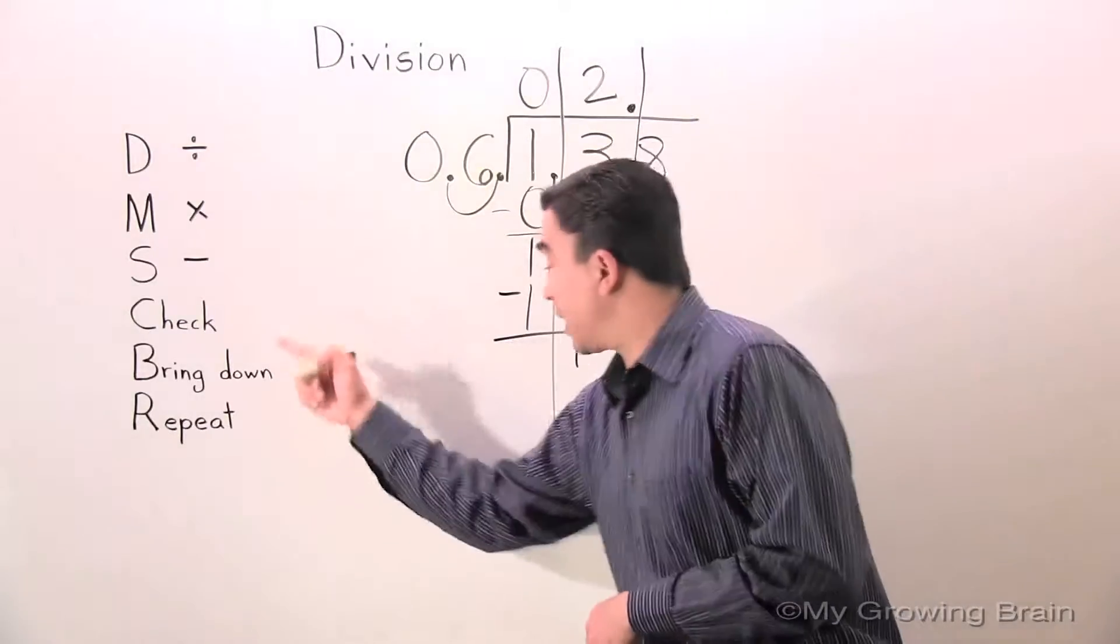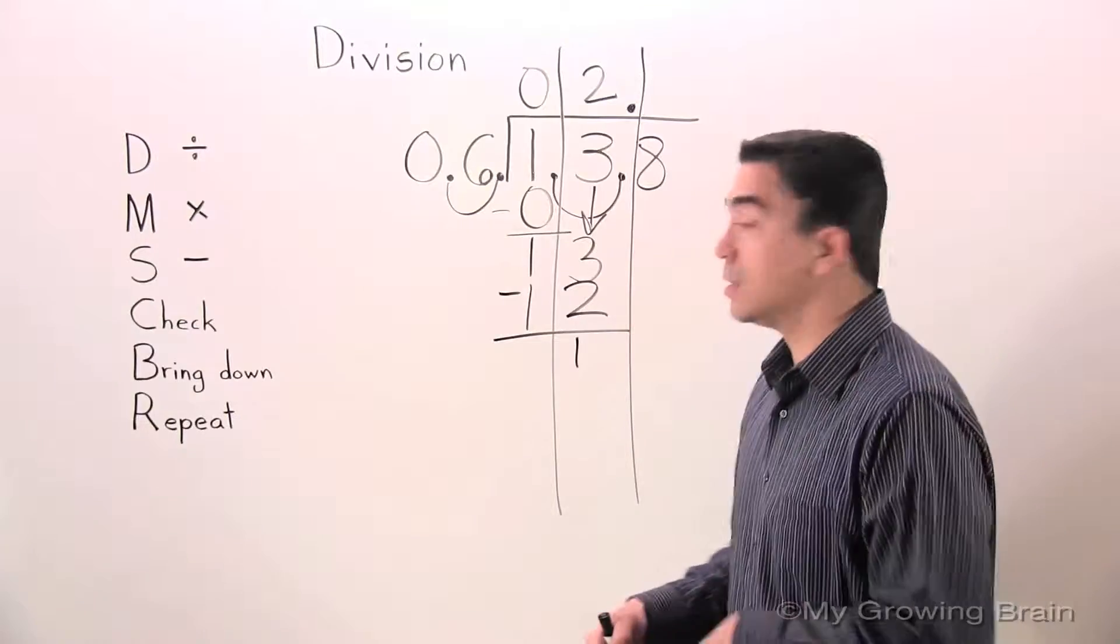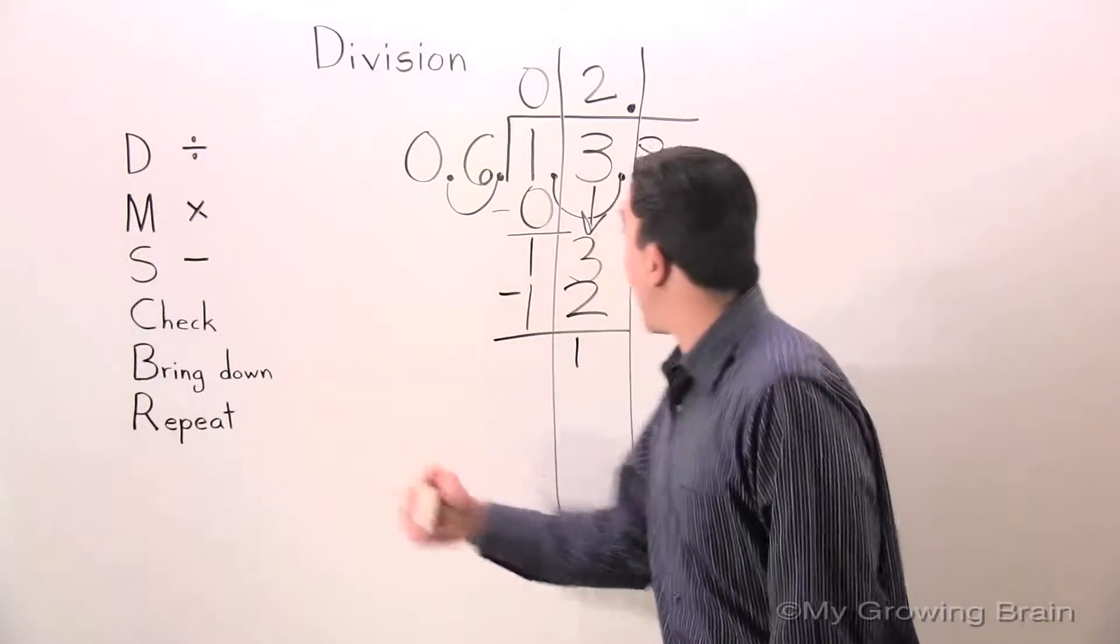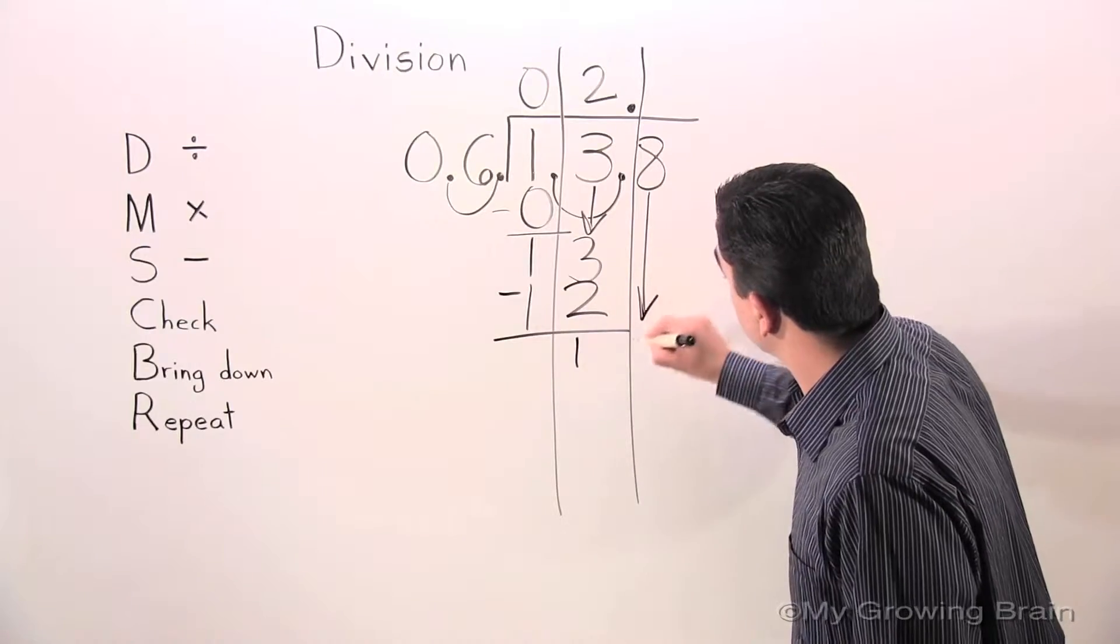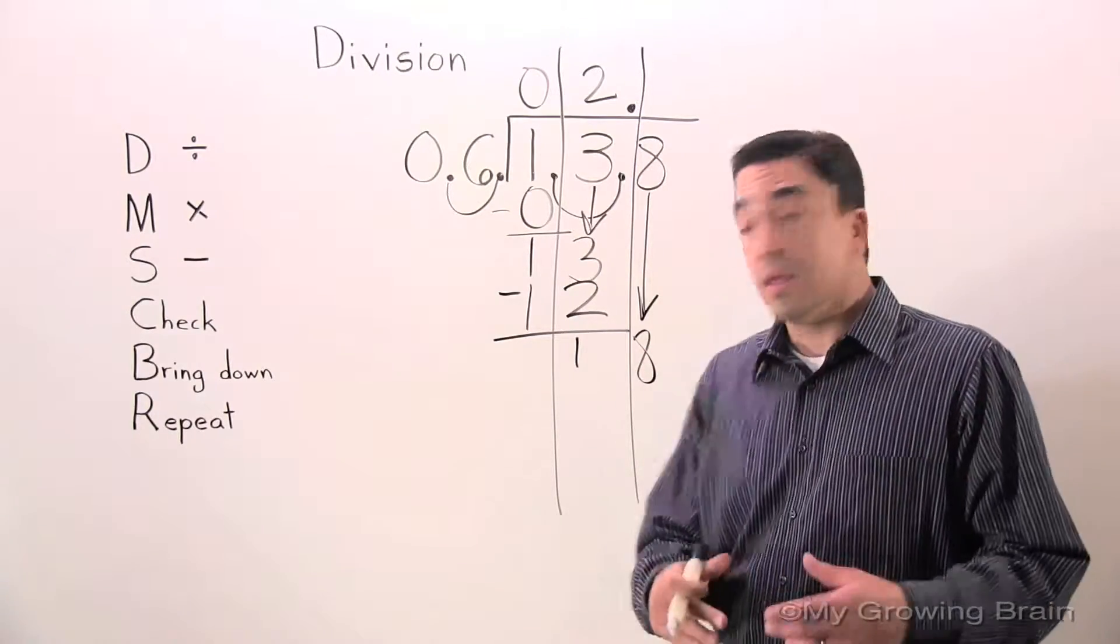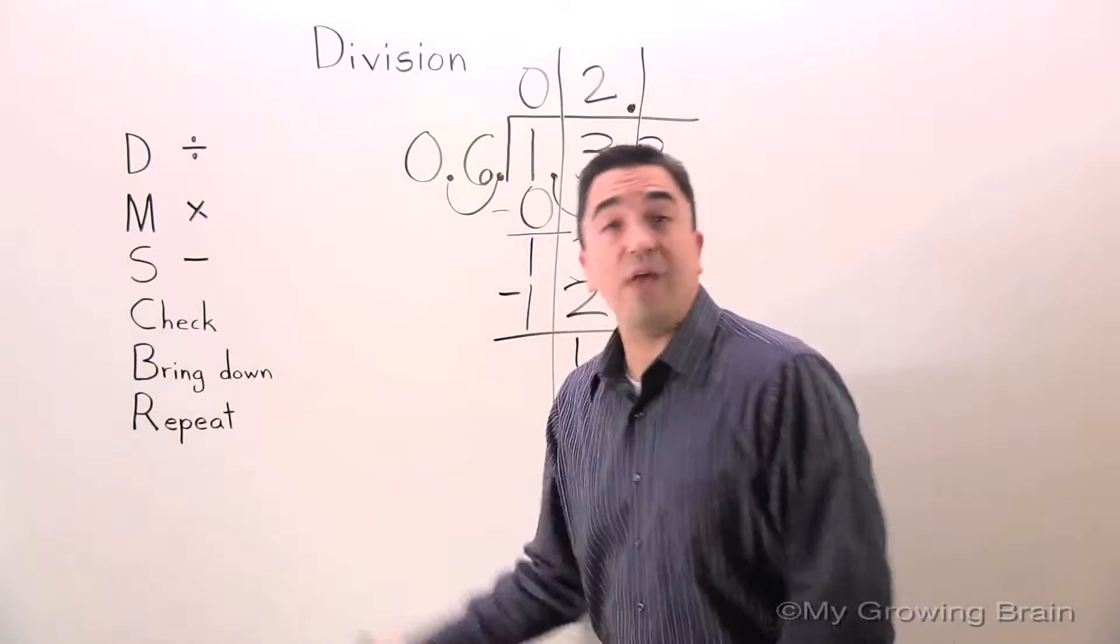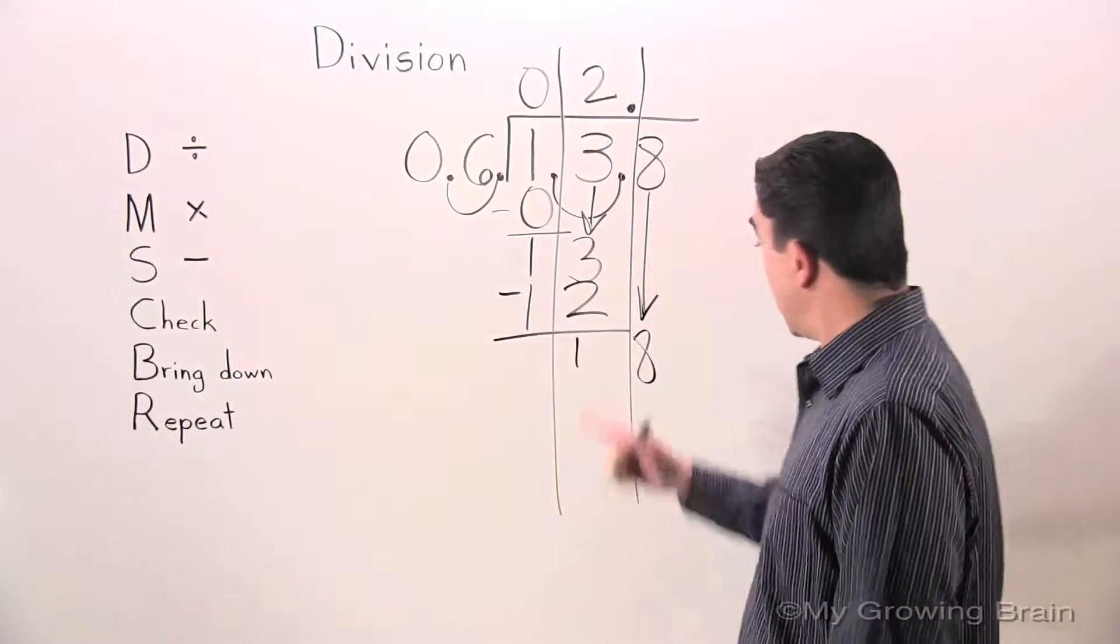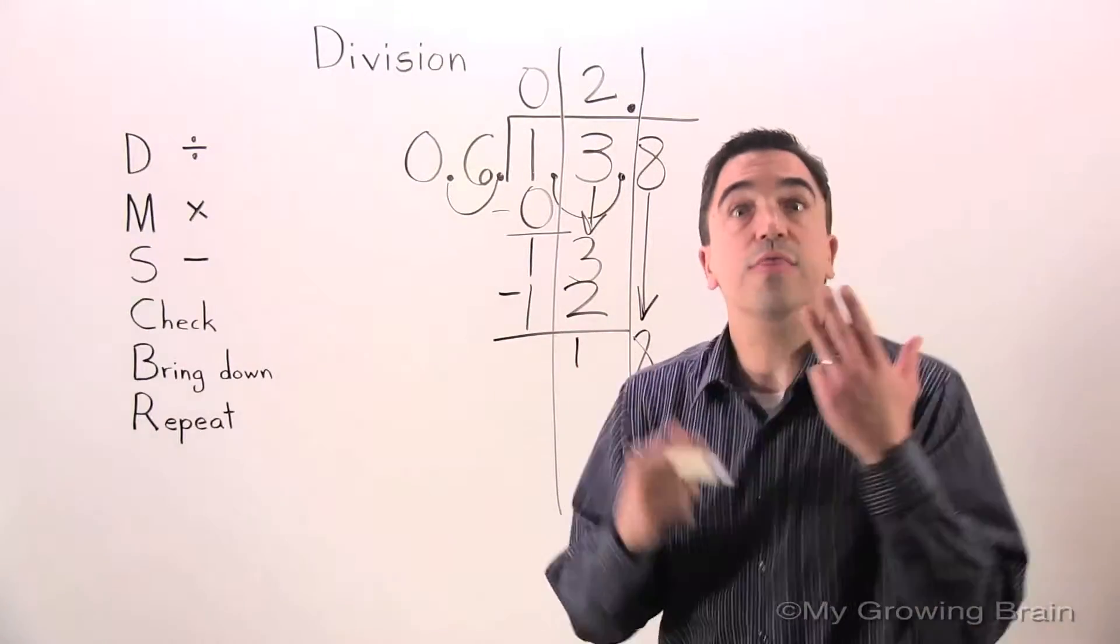Next step, check: one is less than six, keep on going. Next step, bring down. Bring down the eight. Eighteen. Next step, repeat the process, back to the top. Divide: eighteen divided by six, three.